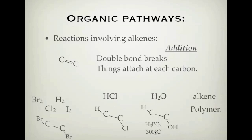The conditions needed for this reaction are phosphoric acid at 300 degrees Celsius. The last type of addition reaction is where you're making a polymer — that's basically adding lots and lots of alkenes together. Another podcast will be done explaining polymers. But I'll show you a couple of examples of addition reactions and how we can write what they look like.